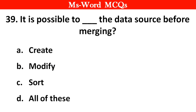It is possible to do the following to the data source before merging: option A — Create, option B — Modify, option C — Sort, option D — All of these. Right answer is option D — All of these.